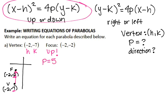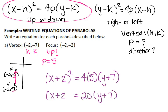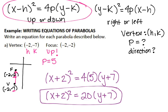Now that I know what p is and I have my h and my k, I can write my answer. So I have x minus h, which becomes x minus negative 2, which becomes x plus 2 quantity squared, equals 4p — and 4 times 5 is 20 — times y minus k, so y minus negative 7 becomes y plus 7. So I have x plus 2 quantity squared equals 20 times y plus 7. This is my equation for the parabola with vertex at negative 2, negative 7, and focus at negative 2, negative 2.